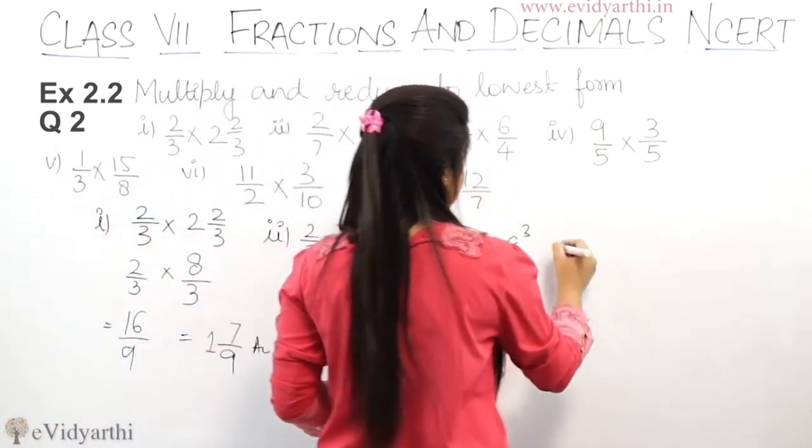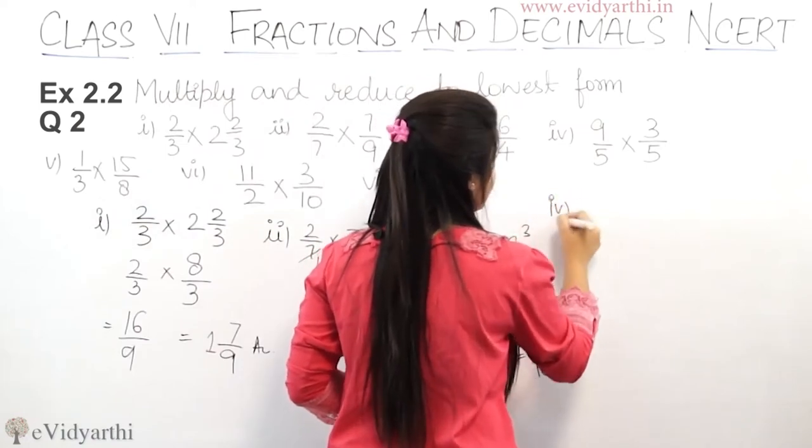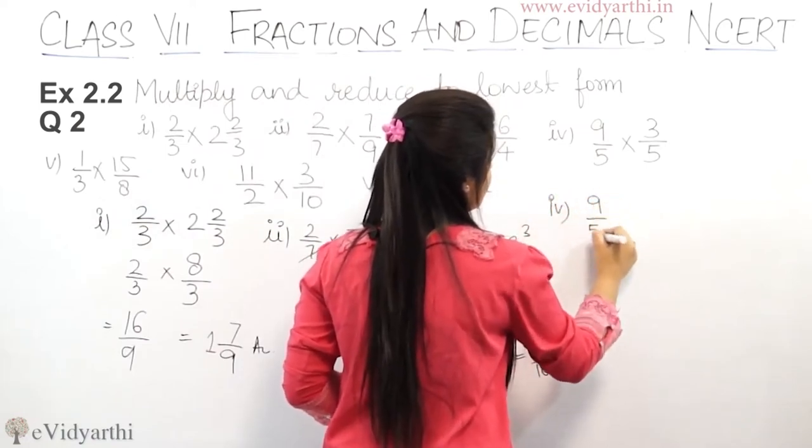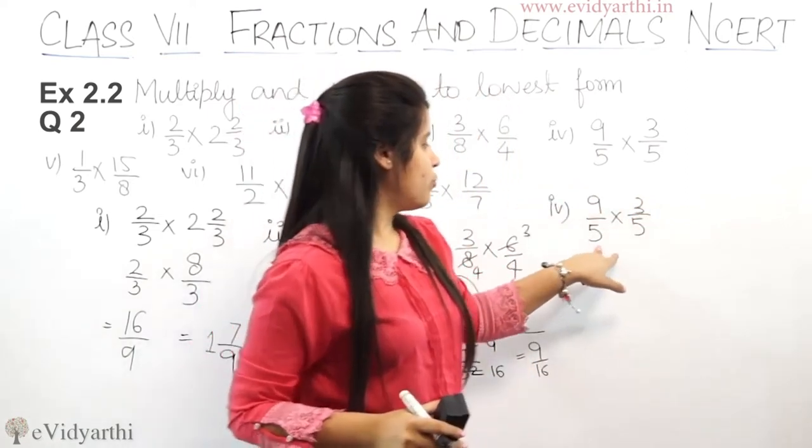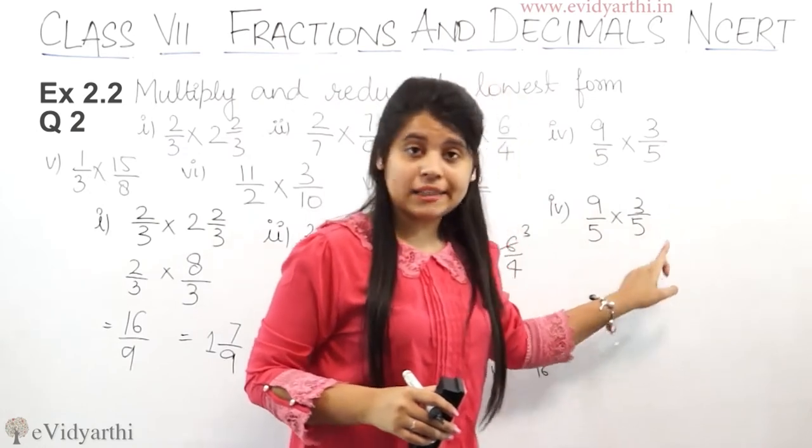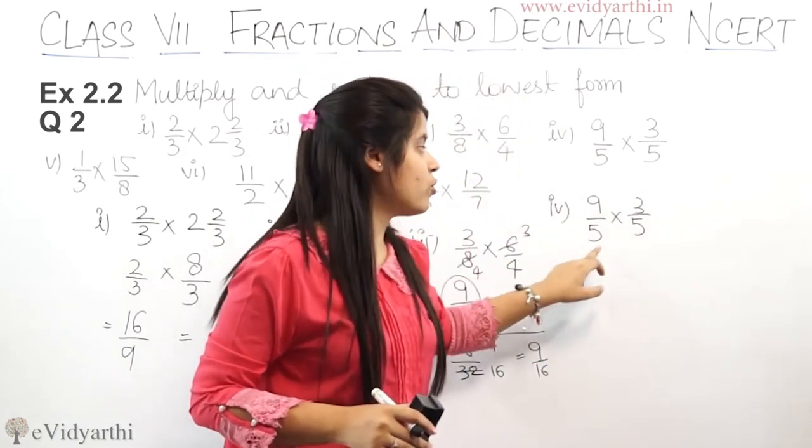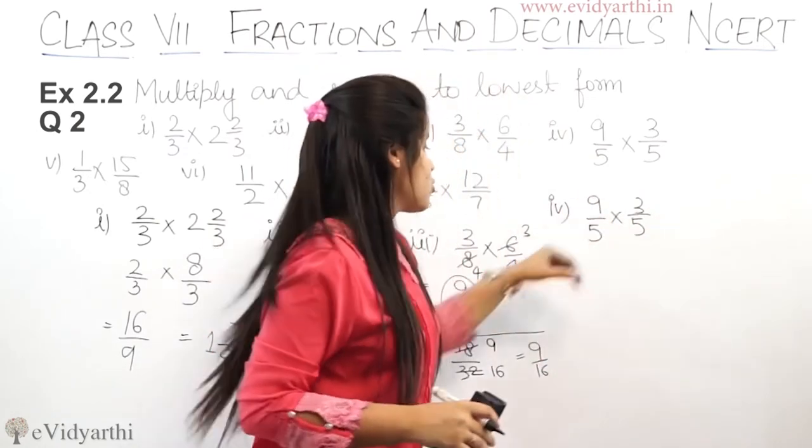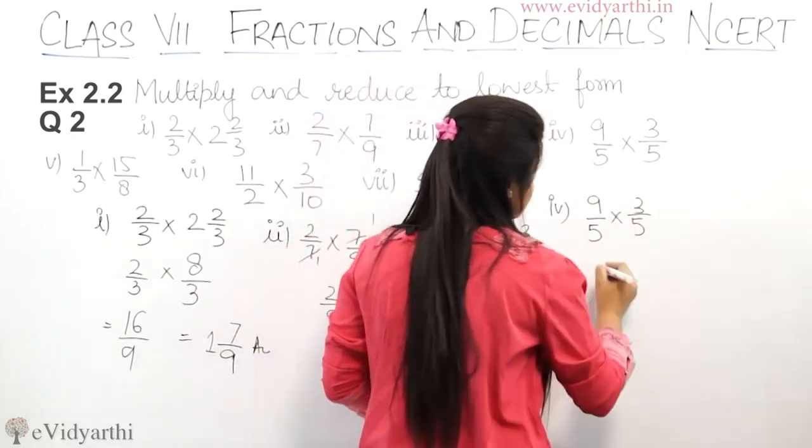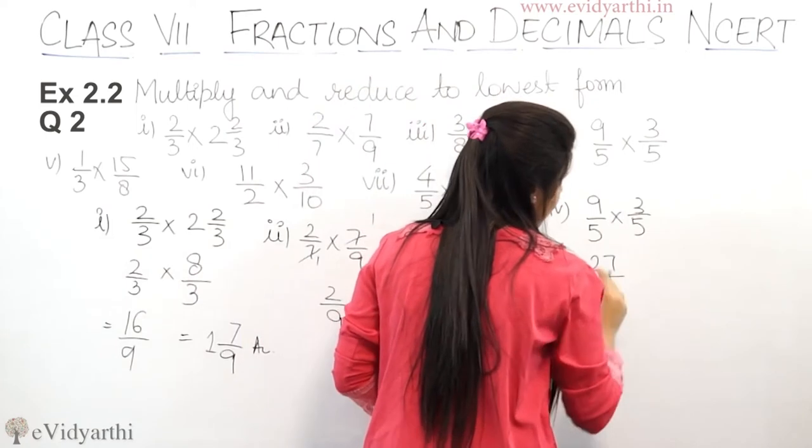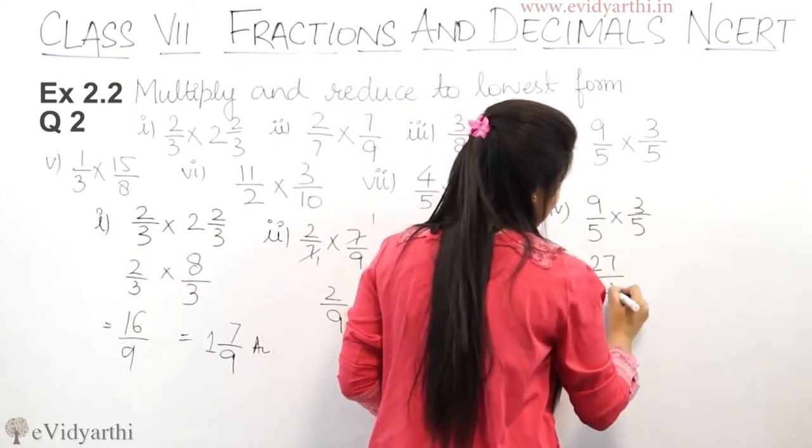Now we go to the fourth part. Fourth part is 9 upon 5 into 3 upon 5. So now not 9 or 5 cut, not 9 plus 5 either, not 9 plus 5 or 3. So you cannot cut, directly multiply. 9 into 3 is 27, 5 into 5 is 25.